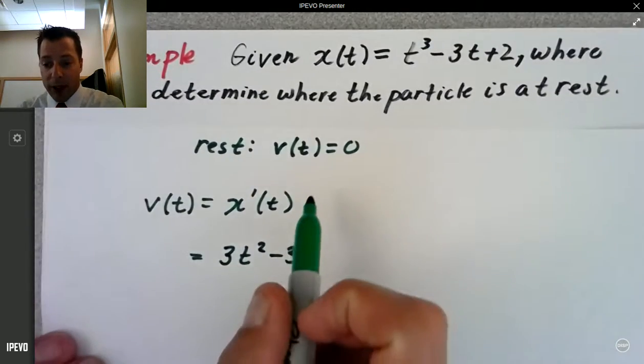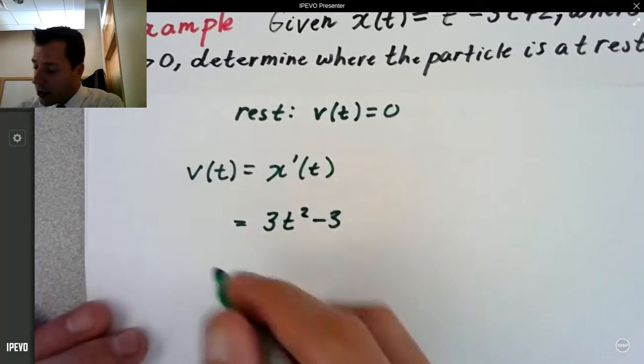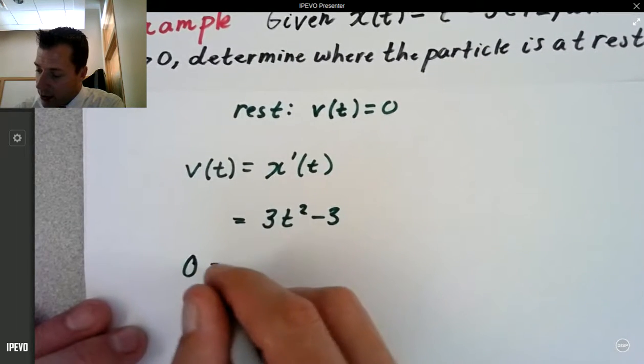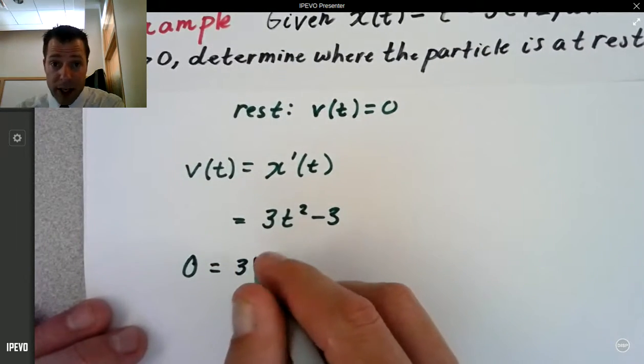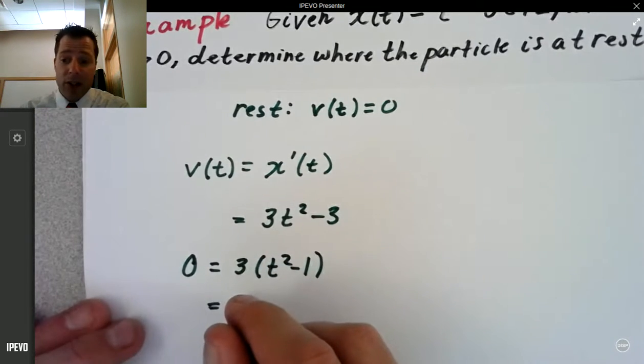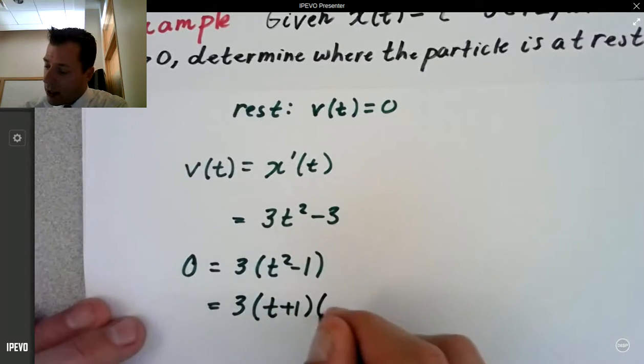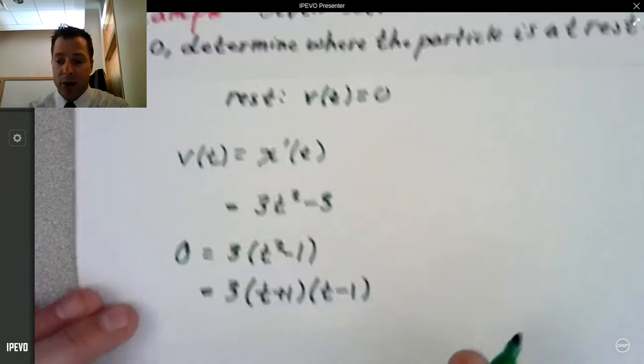We just talked about the particle's going to be at rest when the velocity is equal to 0. So set the velocity equal to 0, and I'm going to factor out the 3 here, so I have t squared minus 1. This is a difference of two squares pattern, so I'd have 3 times t plus 1 times the quantity t minus 1.